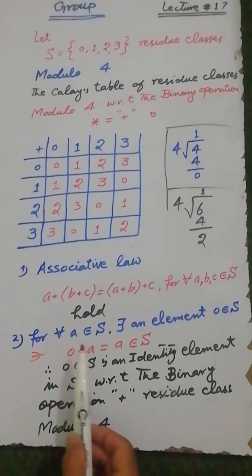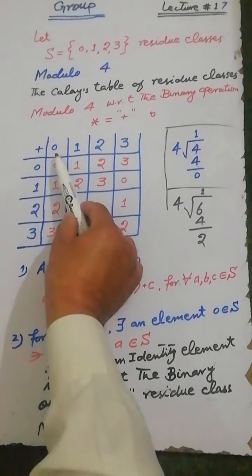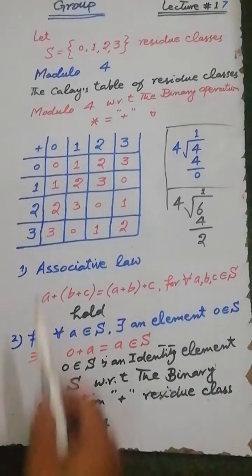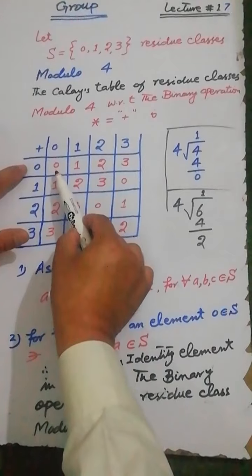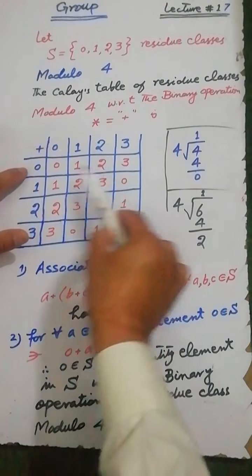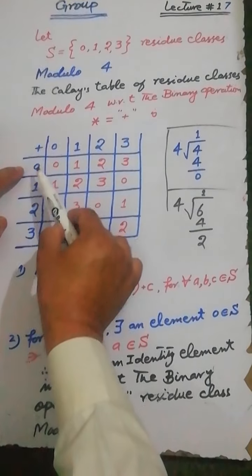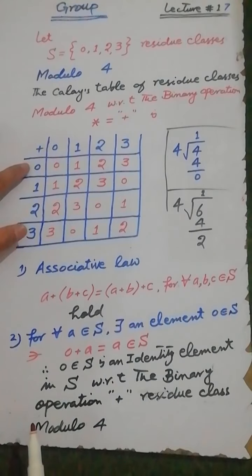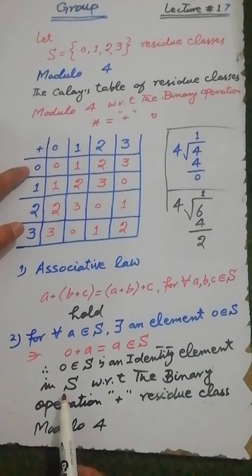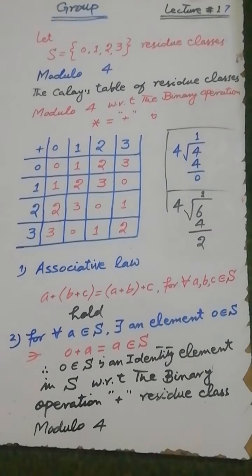Also, for each element A belonging to S, there exists an element 0 in S such that 0+0=0, 0+1=1, 0+2=2, and 0+3=3. That is, 0 behaves as the identity element in the set S with respect to the binary operation addition under residue classes modulo 4.